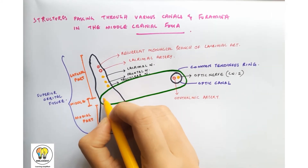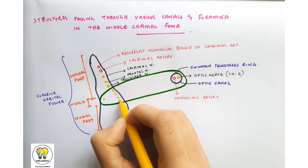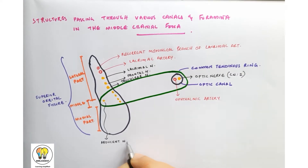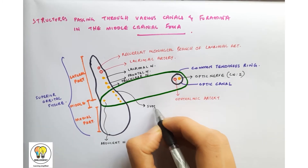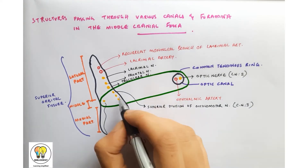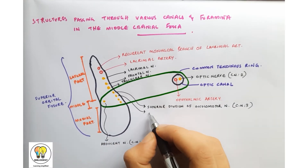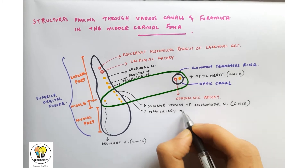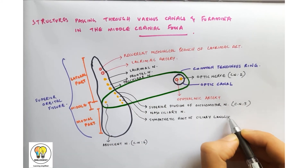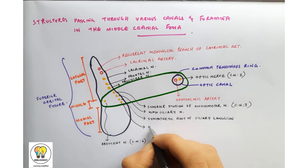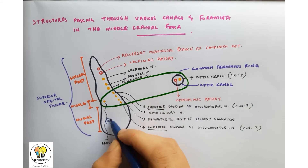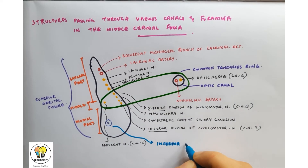In the middle part there are five nerves. The first nerve is the abducens nerve — the sixth cranial nerve. The second is the superior division of the oculomotor nerve. The third is the nasociliary nerve. The fourth is the sympathetic root of the ciliary ganglion. The fifth is the inferior division of the oculomotor nerve — so there are superior and inferior divisions of the oculomotor nerve.